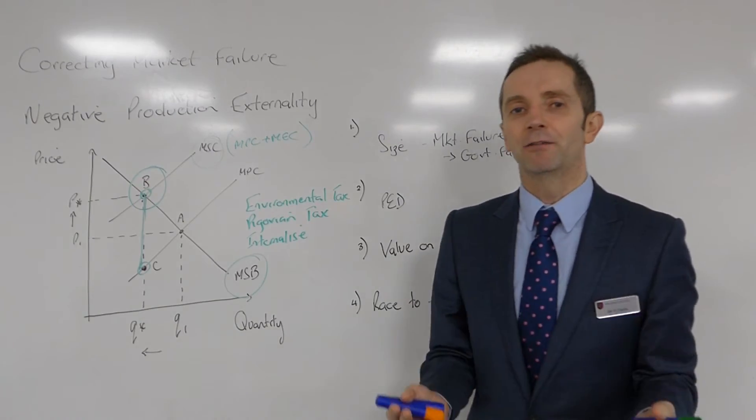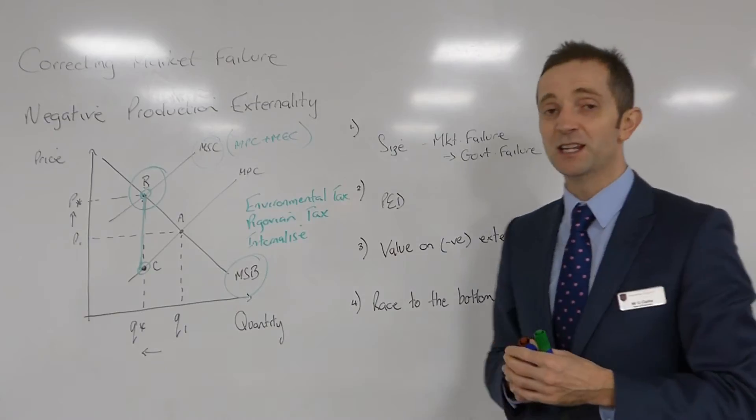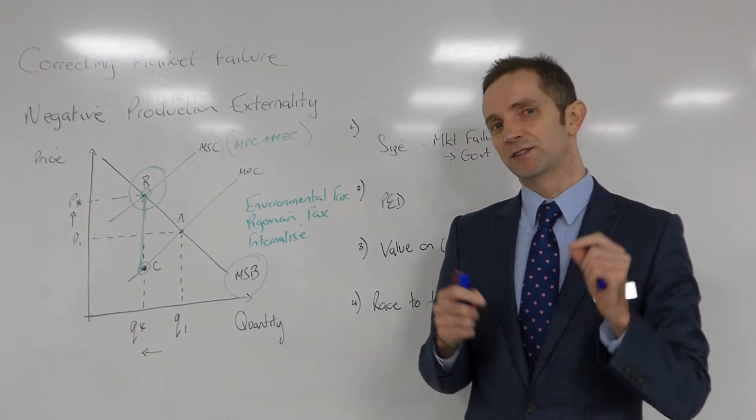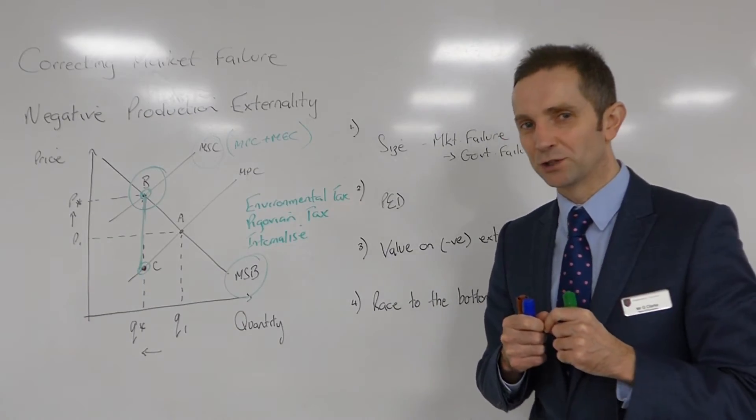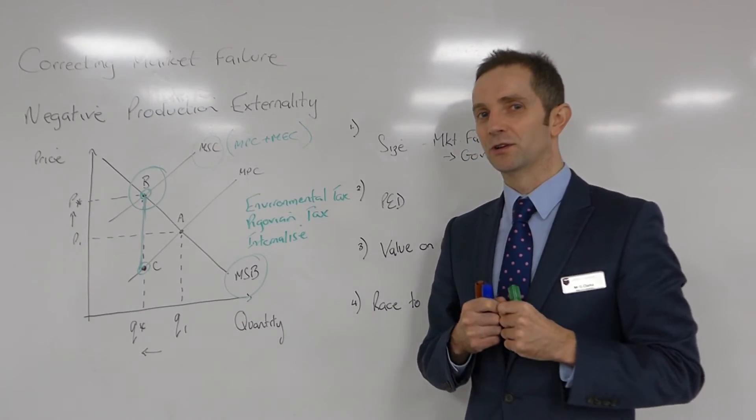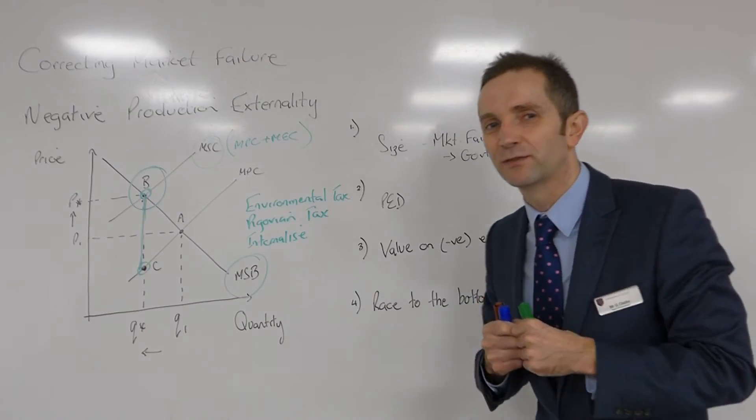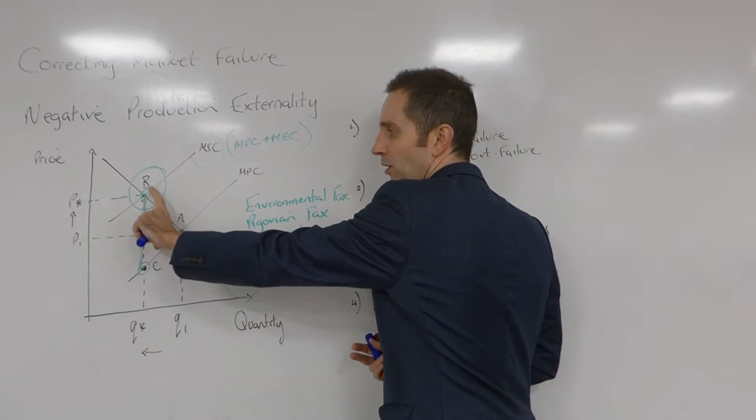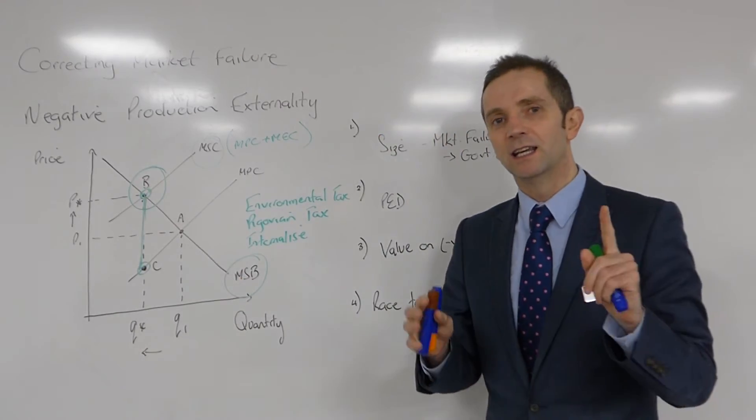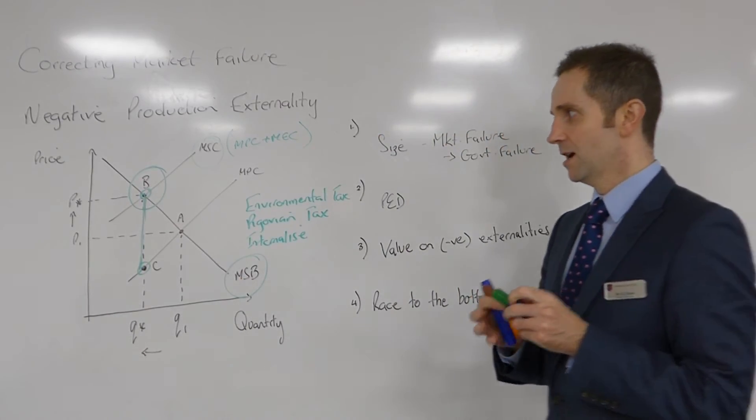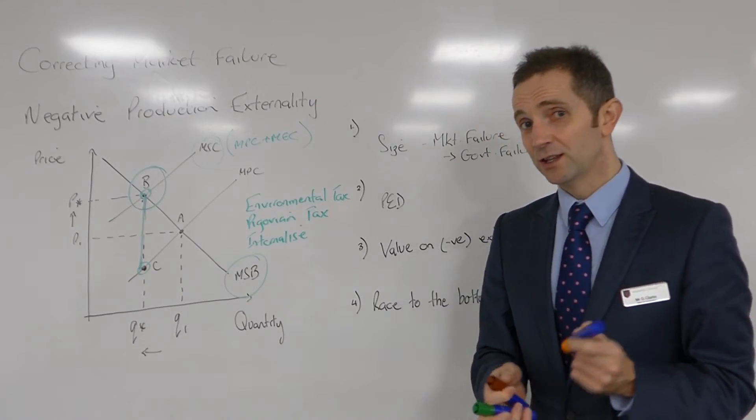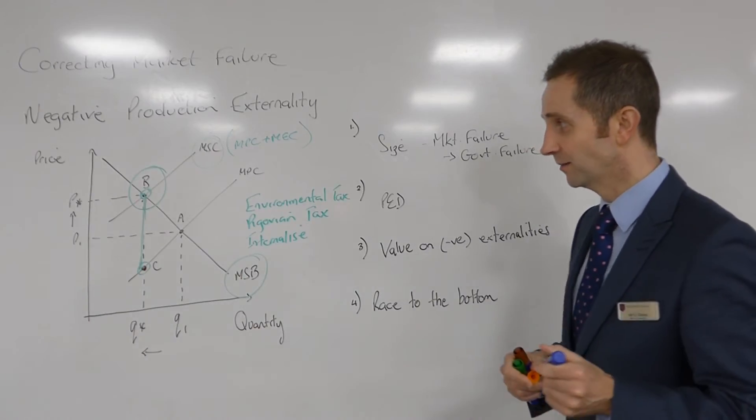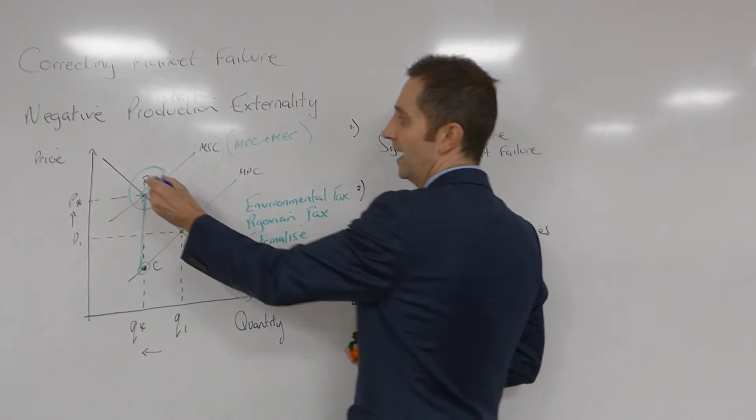It is very, very difficult for the government, for anybody really, to very accurately assess the size of the external costs. How do you really measure accurately the external costs being imposed upon society from a polluting firm? Very, very difficult. Therefore, to put a numerical value on that BC is also very difficult. And actually, what might happen is the government might overestimate the damage being imposed upon society. If that happens, MSC in worst-case scenario might end up up here, where you've got a level of output Q2.